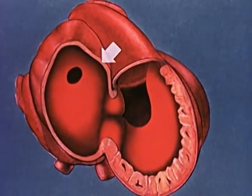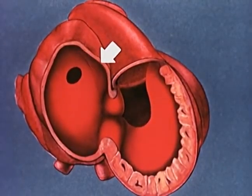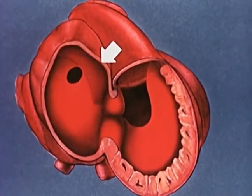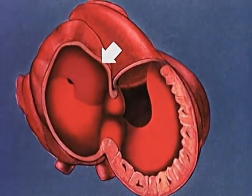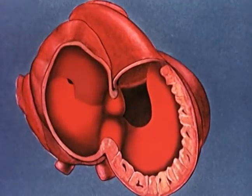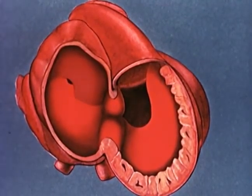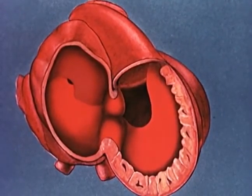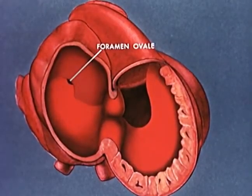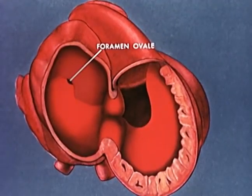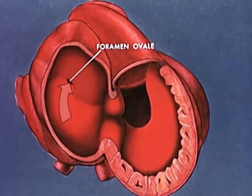Another interatrial septum, the septum secundum, develops from a ridge just to the right of the septum primum and extends down like a curtain over the interatrial penetration. The advanced edge of the septum secundum forms the foramen ovale, with the septum primum acting as a unidirectional flutter valve. Thus, blood can flow only from the right atrium to the left.